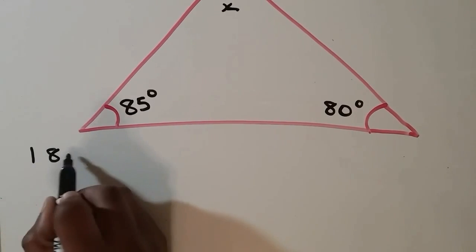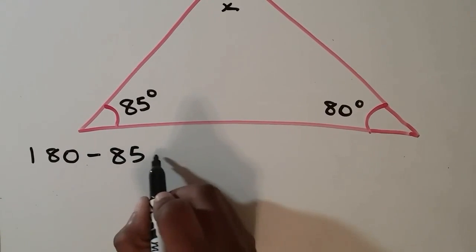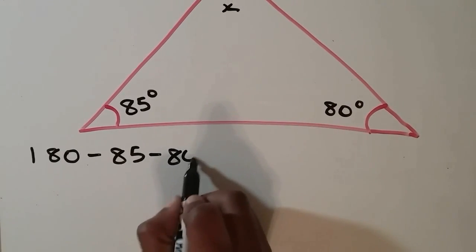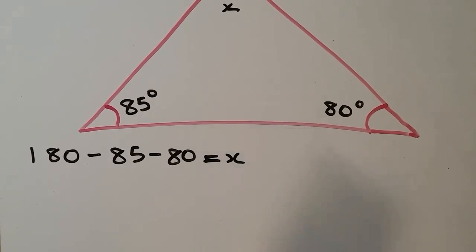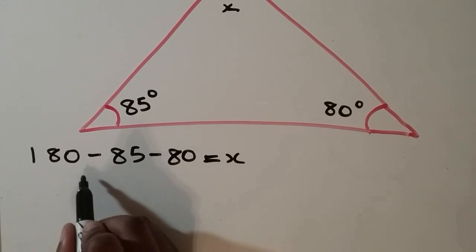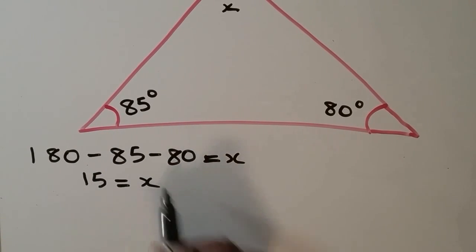To find x, we're going to subtract 85 and 80 from 180 and set it equal to x. When we subtract 85 and 80 from 180, we get 15 for x.